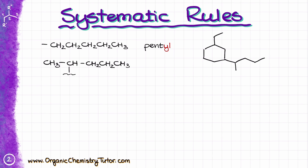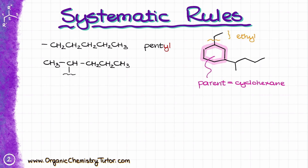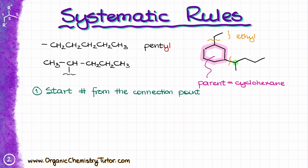The first step in any nomenclature is to find the longest continuous chain. In this particular case, the longest continuous chain is the six-membered ring, so the parent or principal chain is cyclohexane. I have two substituents: a smaller one on top — just a simple two-carbon ethyl group — and another substituent on the bottom right that is more complicated. The rules are: first, find the carbon through which the complex substituent is attached to the parent molecule, and start numbering there. Then, just like for any other name, find the longest continuous chain — but it must start from that attachment carbon.